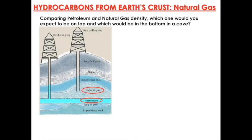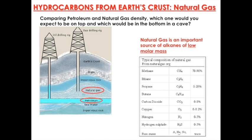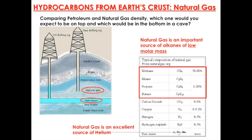Natural gas will be on top and petroleum will be at the bottom. Natural gas is an important source of alkanes of low molecular mass, such as methane, ethane, propane, and butane. Also, natural gas is an excellent source of helium.